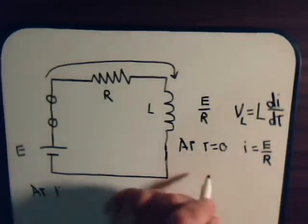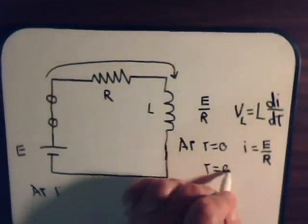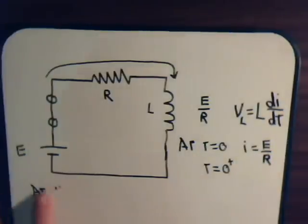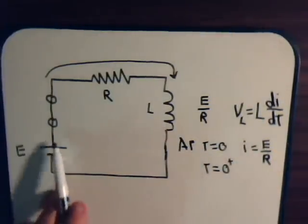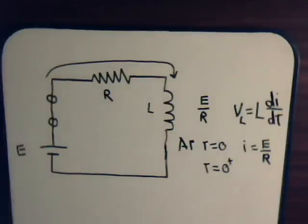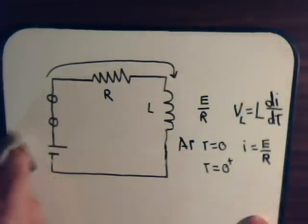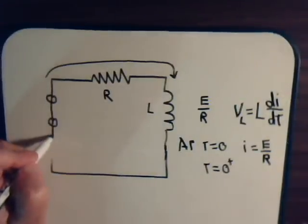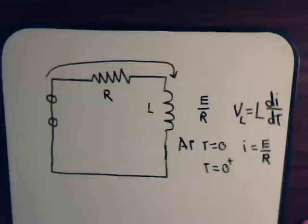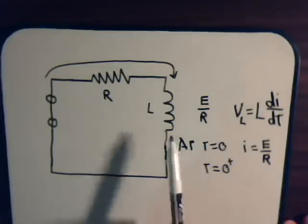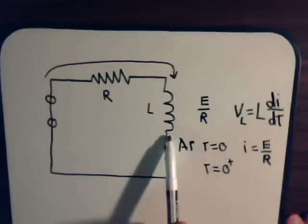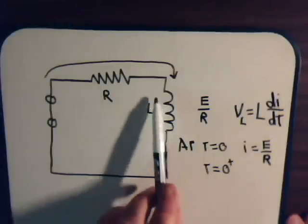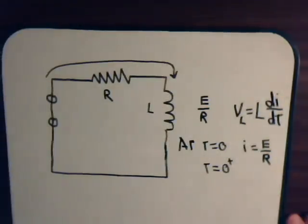A fraction of a second later at t equals zero plus, we remove the battery out of the circuit, so there is no more voltage source. Therefore there is no current being supplied through the circuit, but in the coil there still is that magnetic field. Now with no current flowing through the coil, that magnetic field is going to collapse.